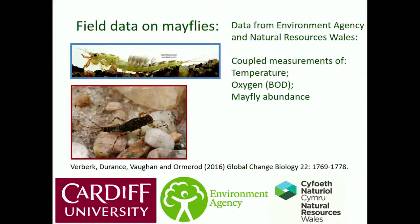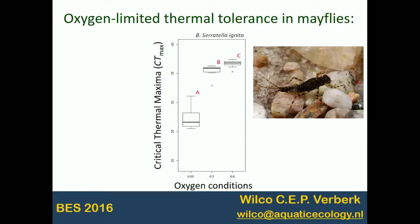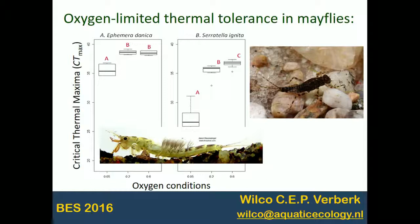We used two species. Before going into the details, we looked in the laboratory whether those species showed the same pattern as for the stoneflies. Seretella ignita shows the same pattern — quite a strong decline in critical thermal maxima with hypoxia. Ephemera danica also showed this response; less heat-susceptible overall, but still a response in hypoxia.